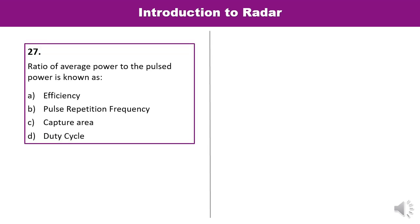Question 27: The ratio of average power to the pulsed power is known as? We have discussed this term again and again in this lecture — this is the duty cycle. So D is the correct answer.